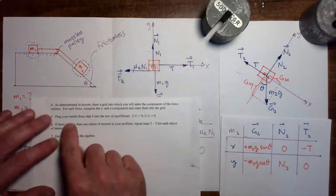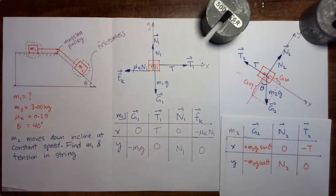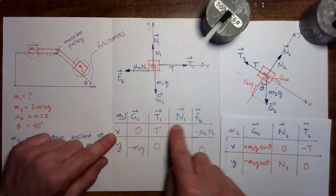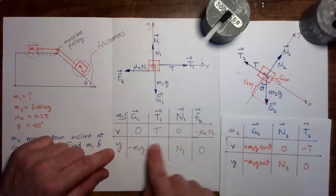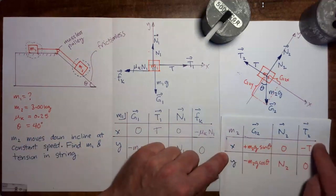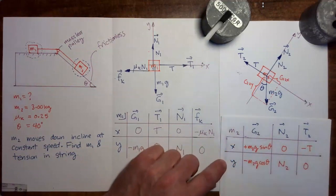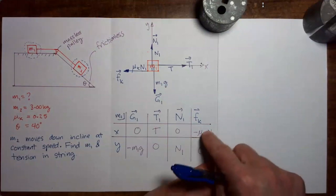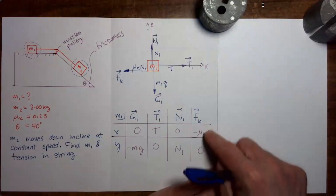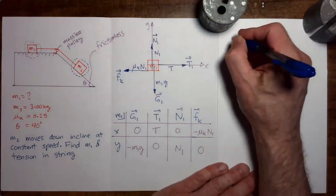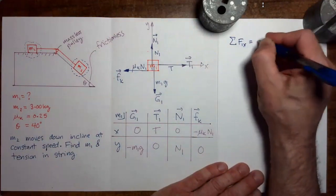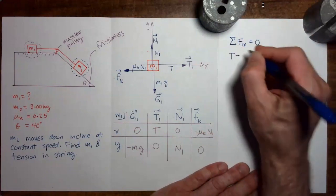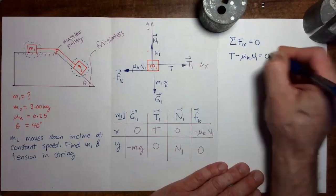Applying the first condition of equilibrium — that the vector sum of all forces is zero for an object in equilibrium or moving at constant speed — gives us four separate equations. Summing x-components for mass 1: T minus mu_k N1 equals 0, call that equation 1. Summing y-components for mass 1: minus M1g plus N1 equals 0, call that equation 2.